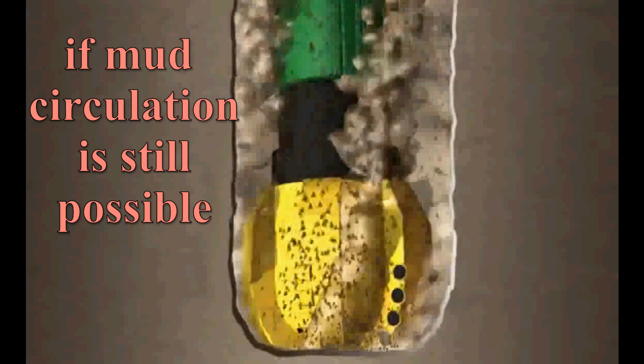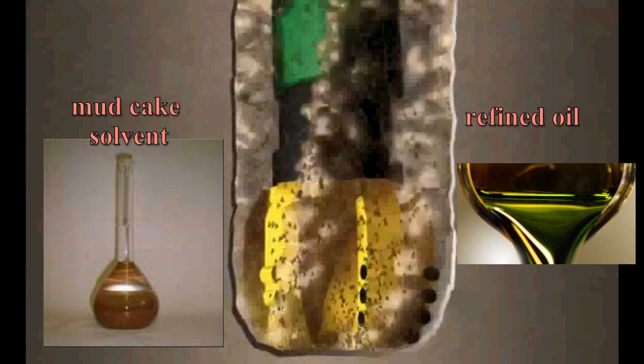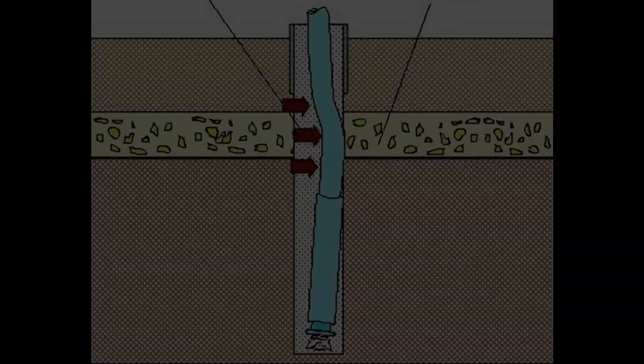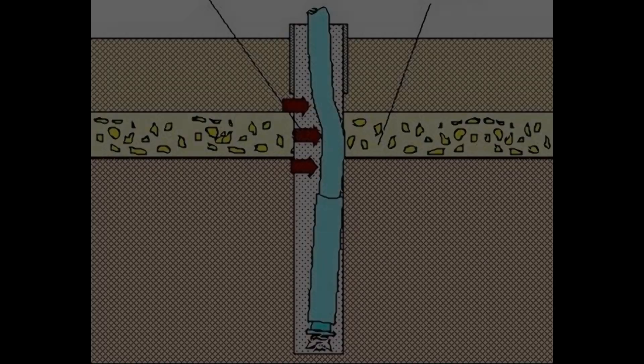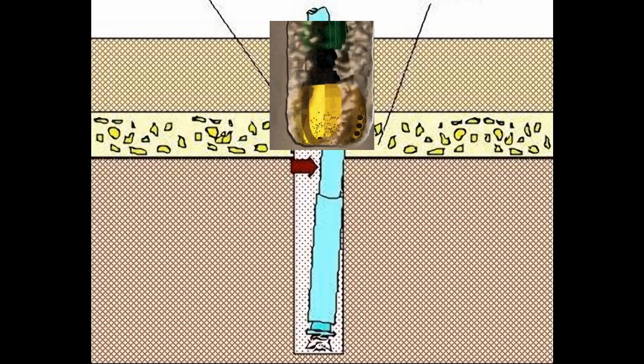Here, if mud circulation is still possible, then a few barrels of refined oil or mud cake solvent might be circulated down the pipe and then up the annulus until it's over the stuck area. Thus, by keeping the tension and torque on the pipe with this fluid, it may be enough to free the stuck pipe.